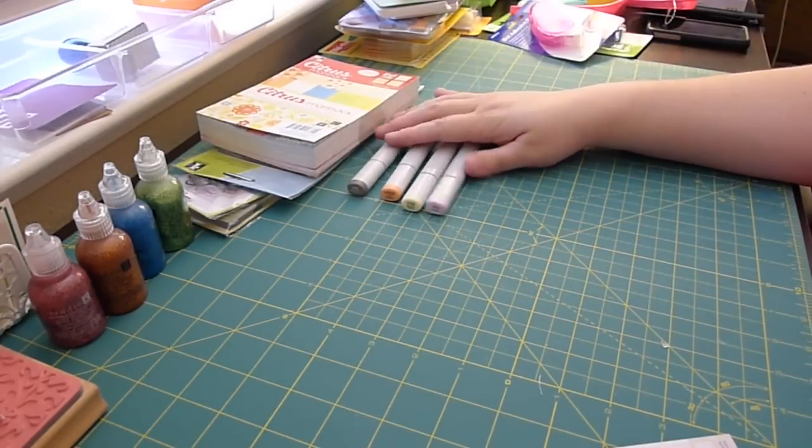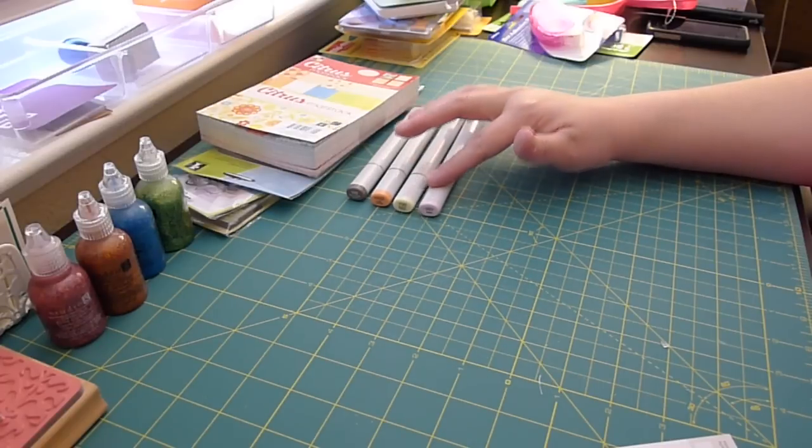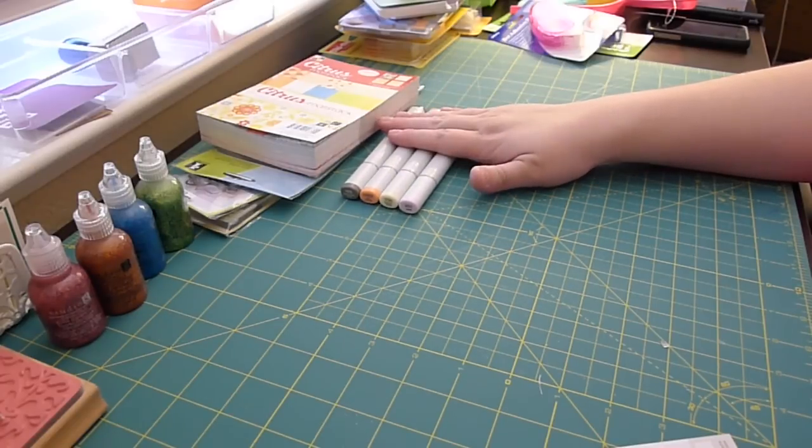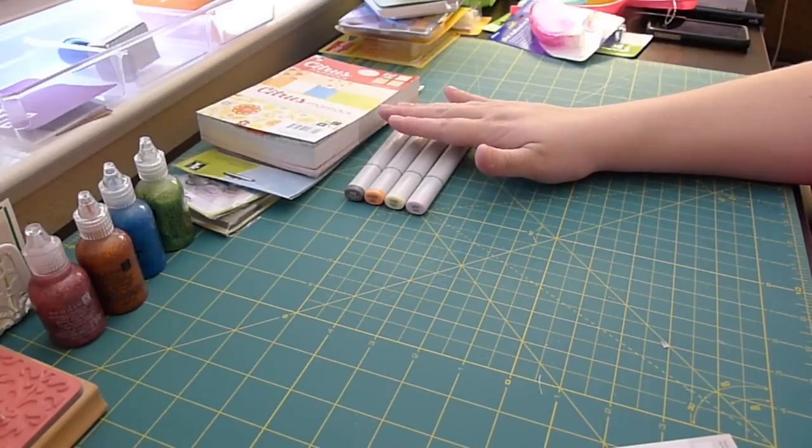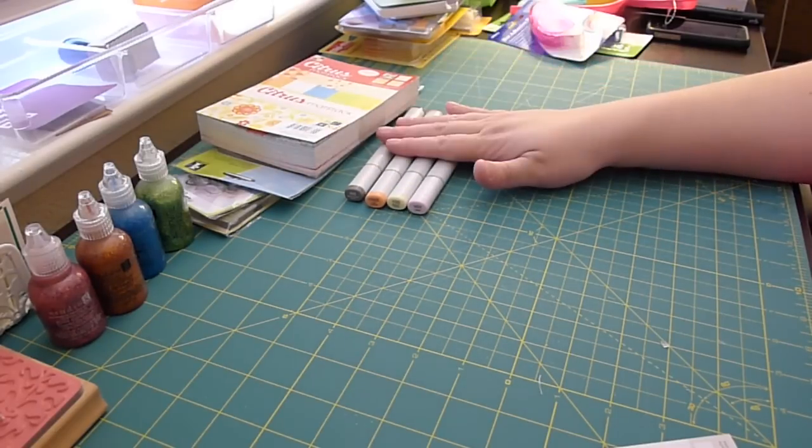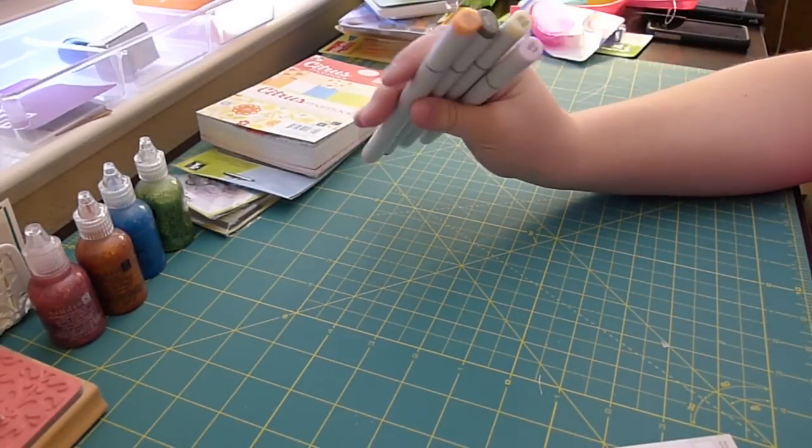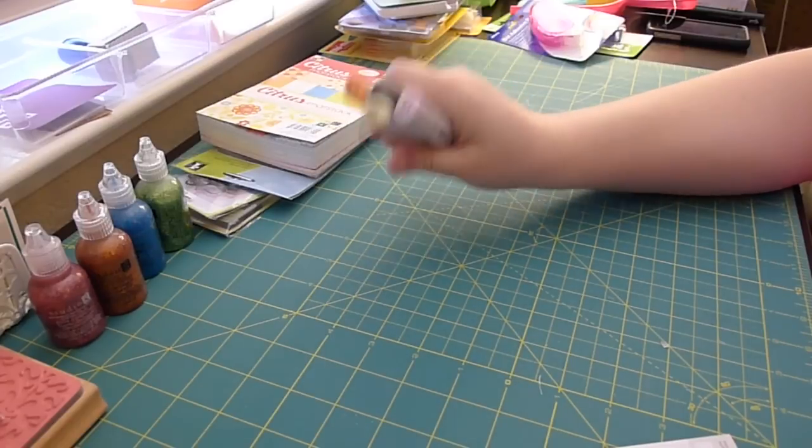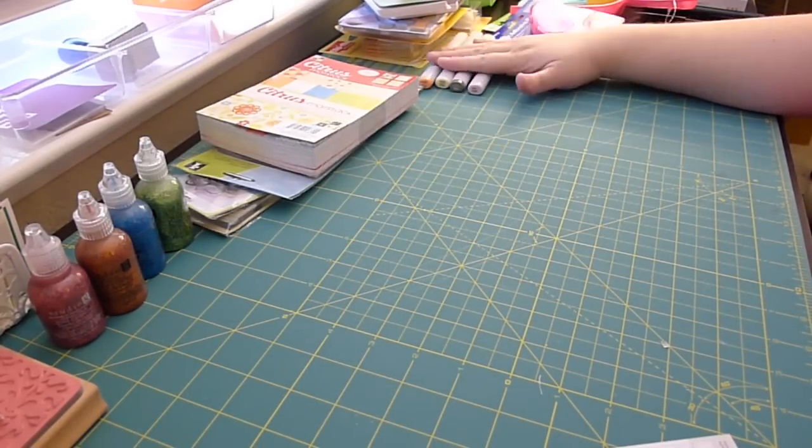These Copics are actually five dollars ninety-nine each at my local store, and they were having a twenty percent off your entire purchase, including the Copics. So I think, what's that, like four dollars eighty-one each, or something like that. I can't do the math in my head that fast. They're super cheap from that place. And they do refills, or re-inking, for a dollar each marker. So, I get all of my Copic stuff from there.